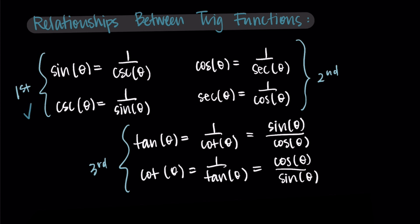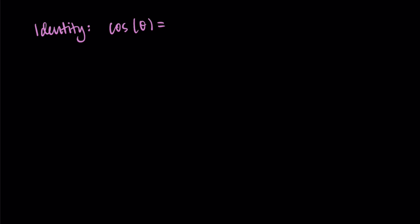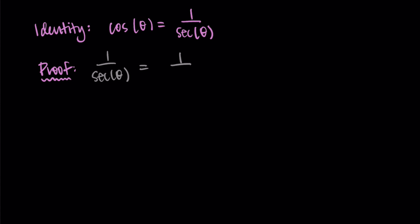We're going to follow a similar process for the other functions. So let's now do cosine and secant. We're going to prove the identity that cosine of theta is equal to one over secant of theta. I'm going to start with one over secant of theta and then rewrite it until we can show that it's equal to cosine.